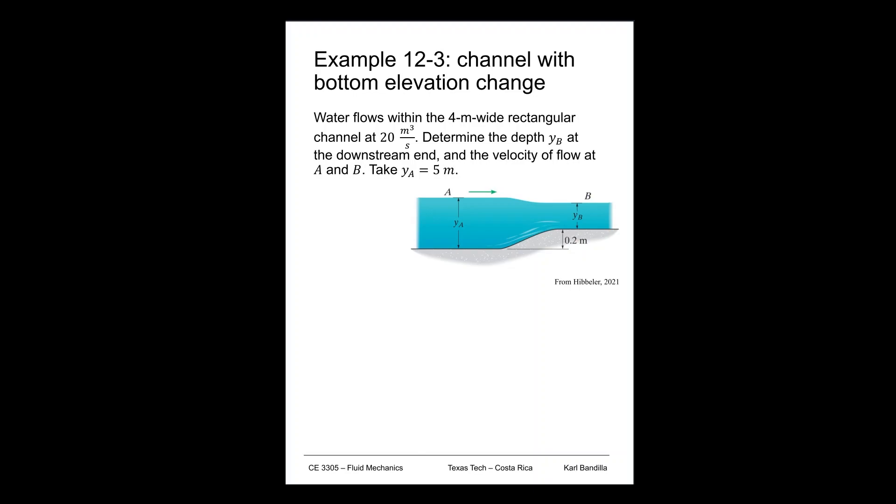This is example 12-3, where we have a channel with a transition in its bottom elevation, so the width stays the same but the bottom elevation changes. We're given that the flow is 4 meters wide at 20 cubic meters per second, and we need to find the depth at B given the depth at A and the height of that little bottom bump, and we also want to find the velocities.